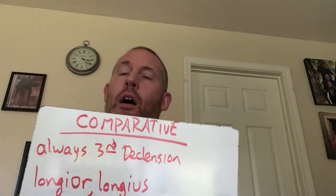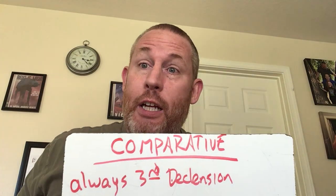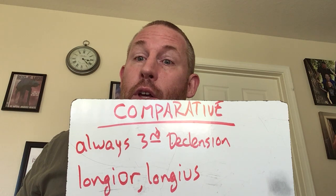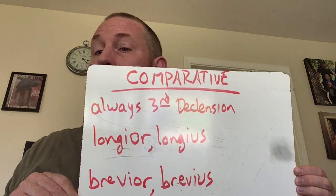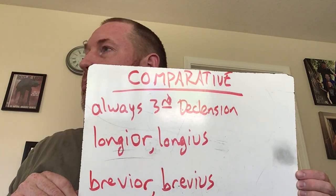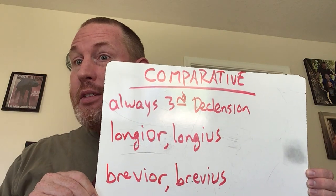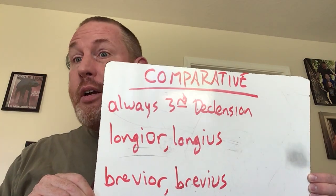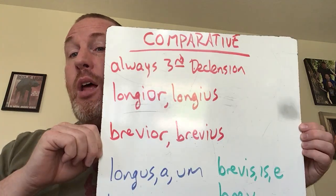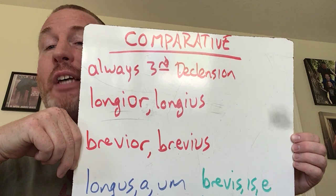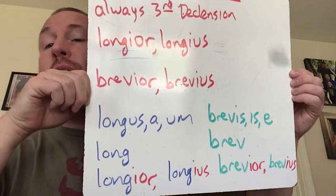Like I said before, and I actually just used the same slide, comparatives are always third declension adjectives. Longior, longius, right? Bravior, bravius. So longus-a-um or bravius-a — it still works the same.